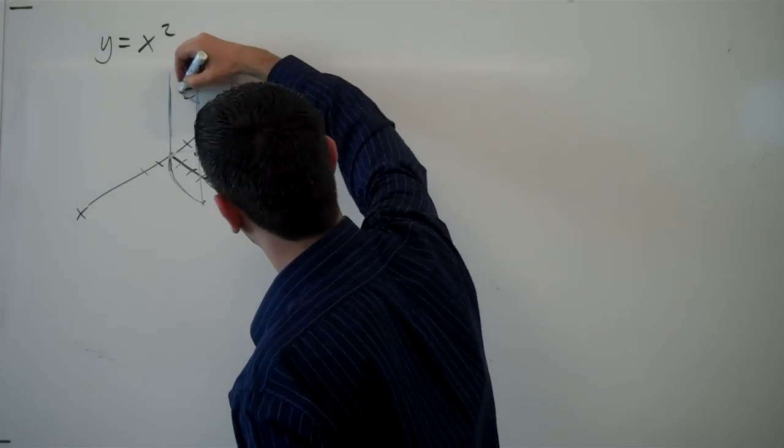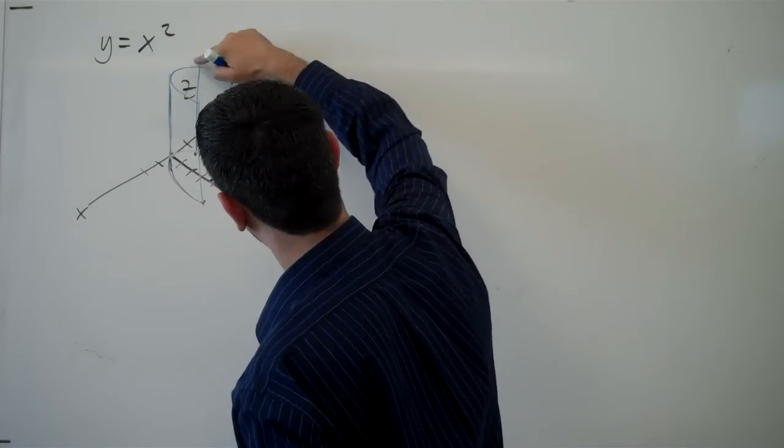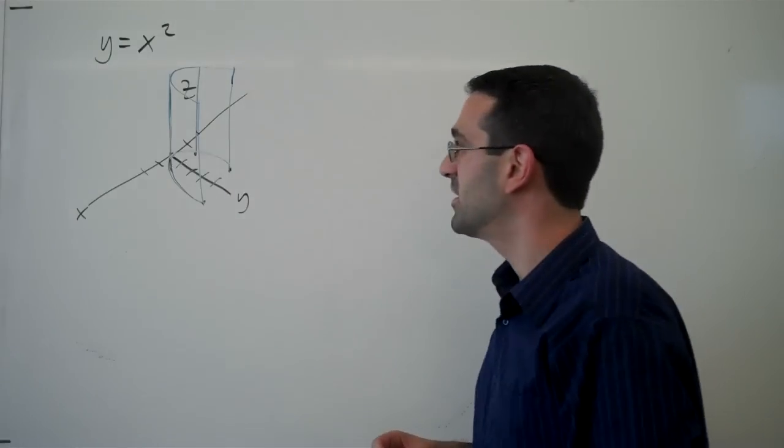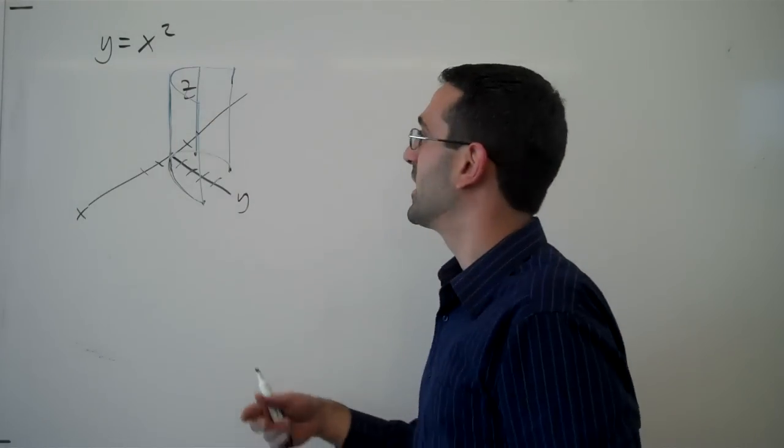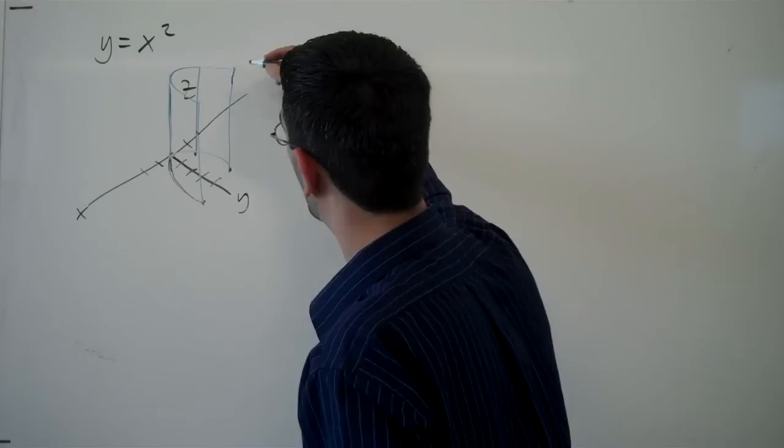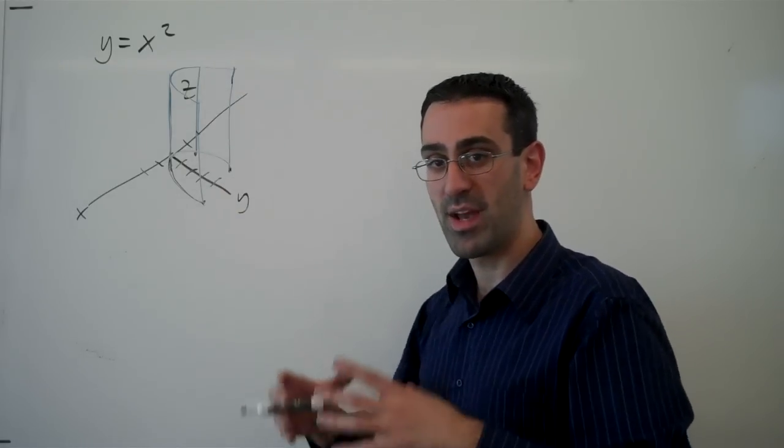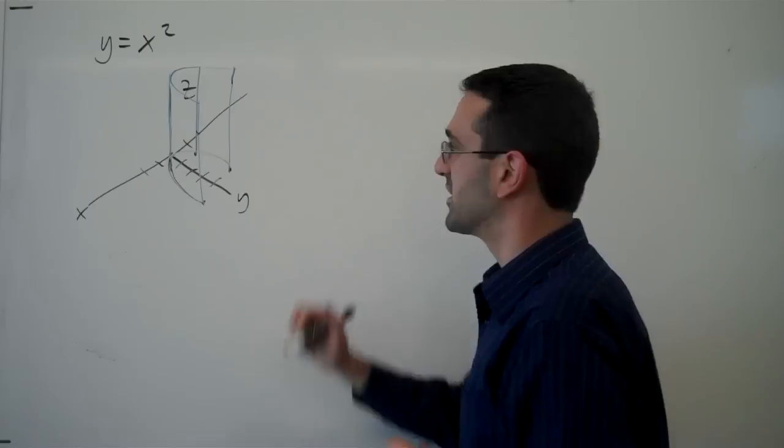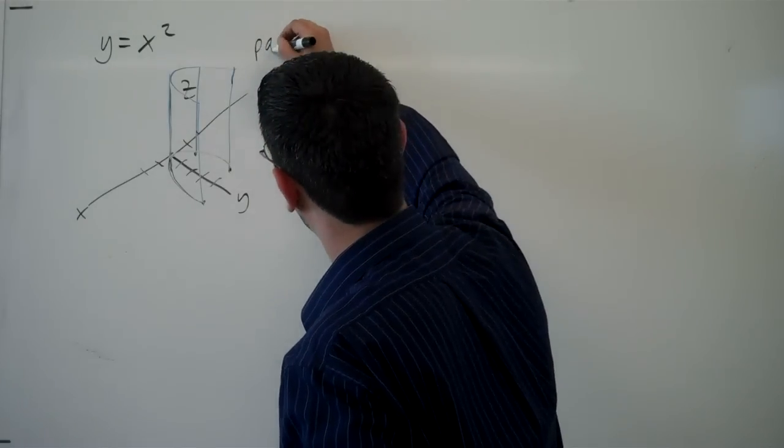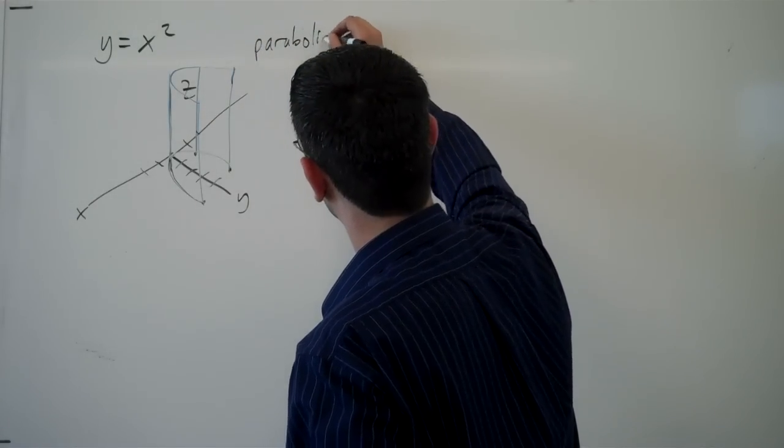And so we end up with not just a parabola, but in fact a parabolic sort of column. In fact, any shape like this we call a cylinder. Whenever we have a single shape extending out in a direction, it's called a cylinder. And so we would call this a parabolic cylinder.